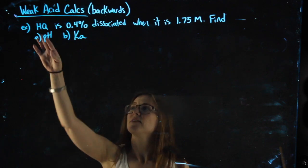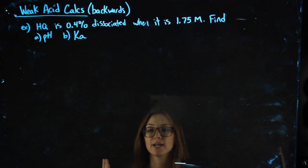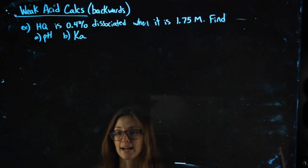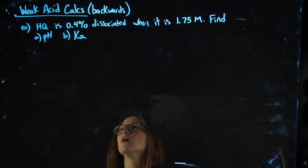Okay, so we have HQ. Q isn't actually an element, so HQ is a made-up weak acid. We know it's weak because it's not something we memorize, it's not on our list of strong acids. We can assume it's an acid because it starts with H.